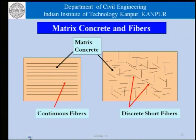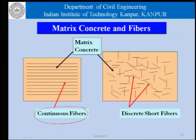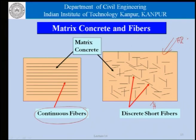This diagram is a representation of matrix concrete and fibers. In one picture, fibers are long, continuous, and oriented in a certain direction with concrete matrix surrounding them. In the other case — which is fiber reinforced concrete as we discuss today — we have short, discrete fibers which are randomly oriented.